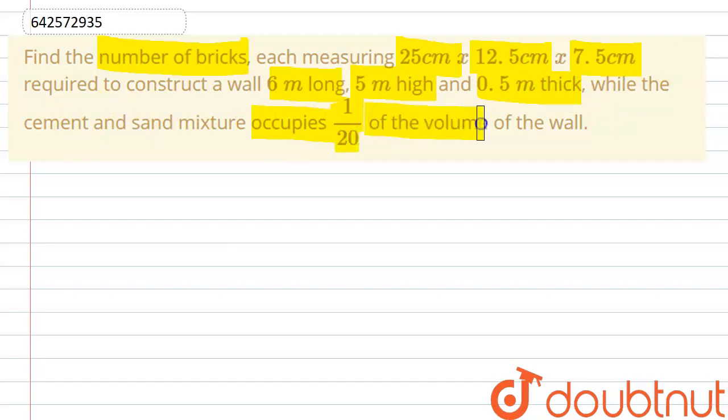1 by 20 of the volume of the wall. So we are given in the question that the wall dimensions are 6 meter multiplied by 5 meter multiplied by 0.5 meter.